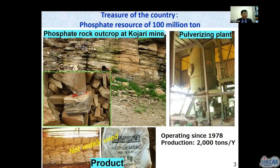However, there are phosphate resources of 100 million tons. The government of Burkina Faso has tried to utilize this resource in order to improve soil fertility and then to increase agricultural productivity. Since 1978, the government has excavated, pulverized, and sold phosphate rock. However, it has not been widely used due to its low solubility.